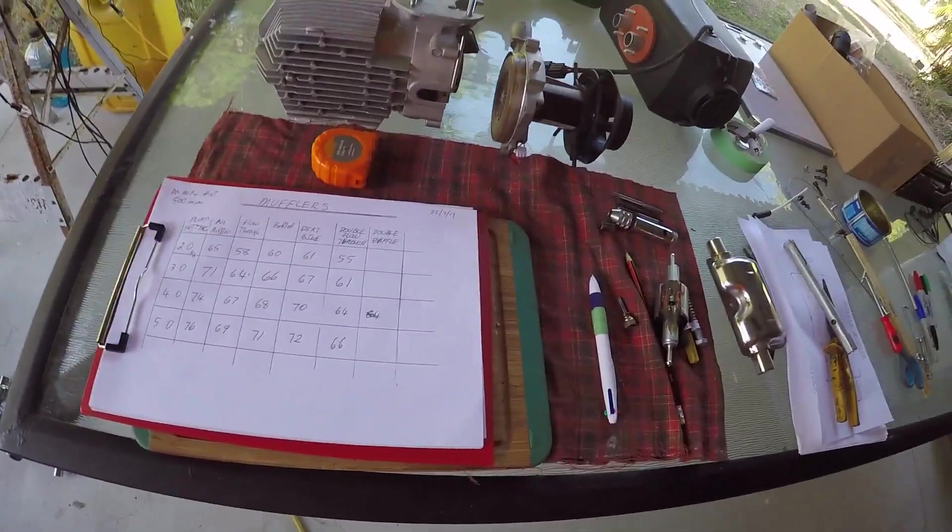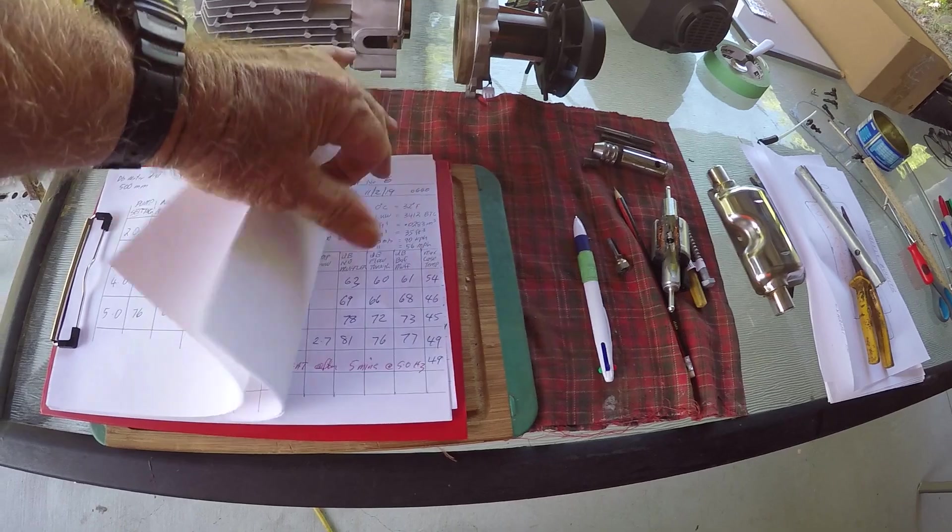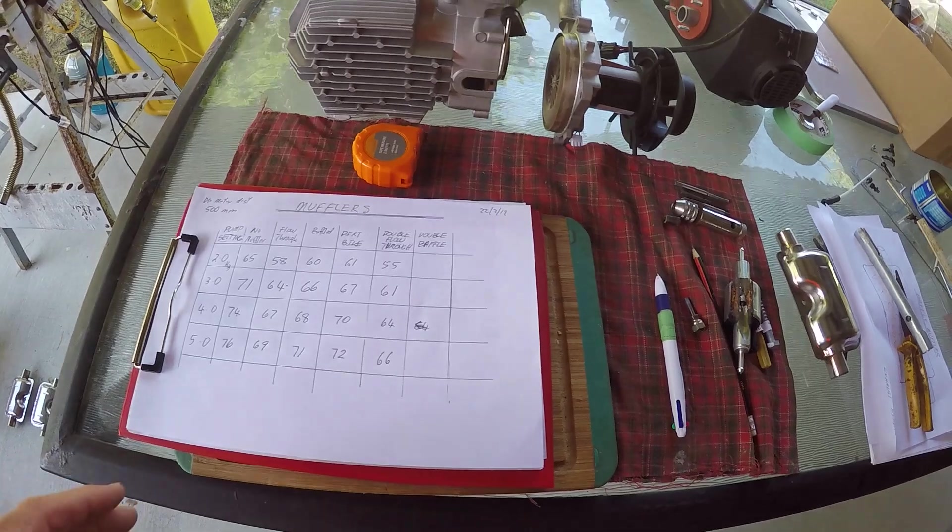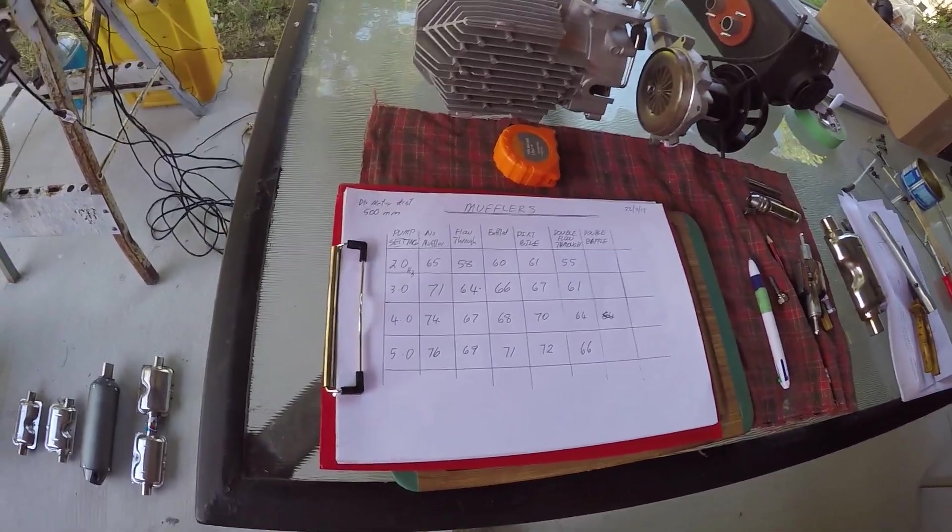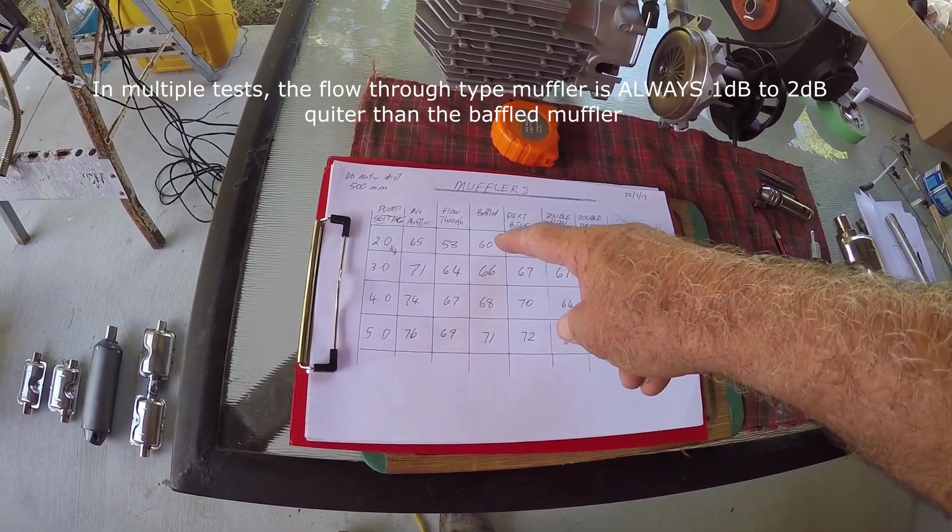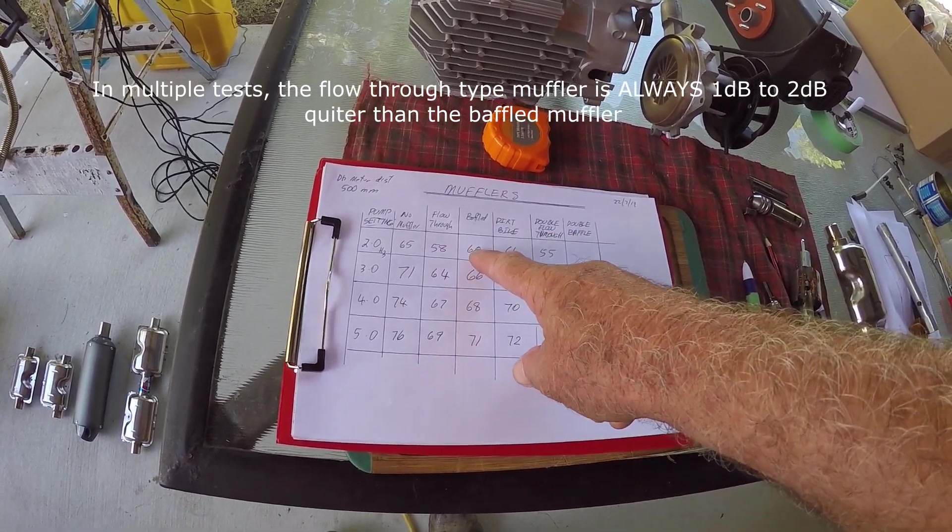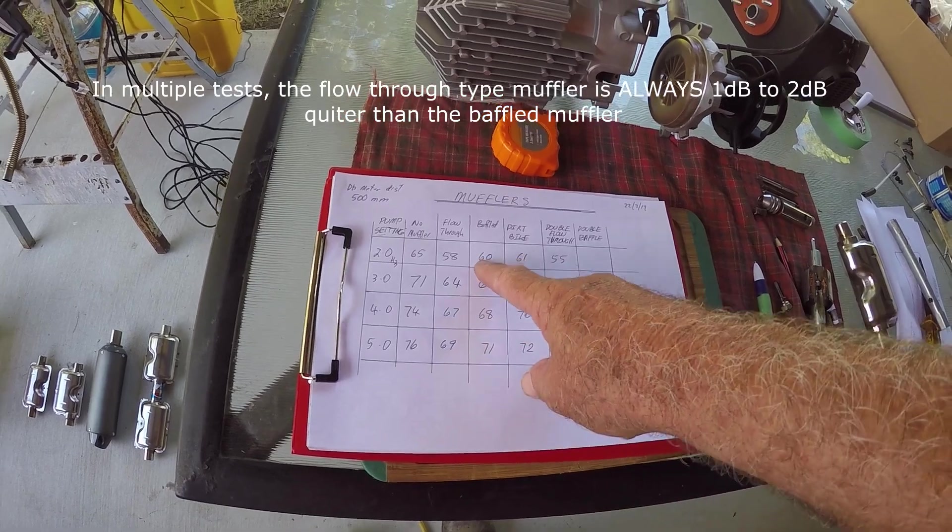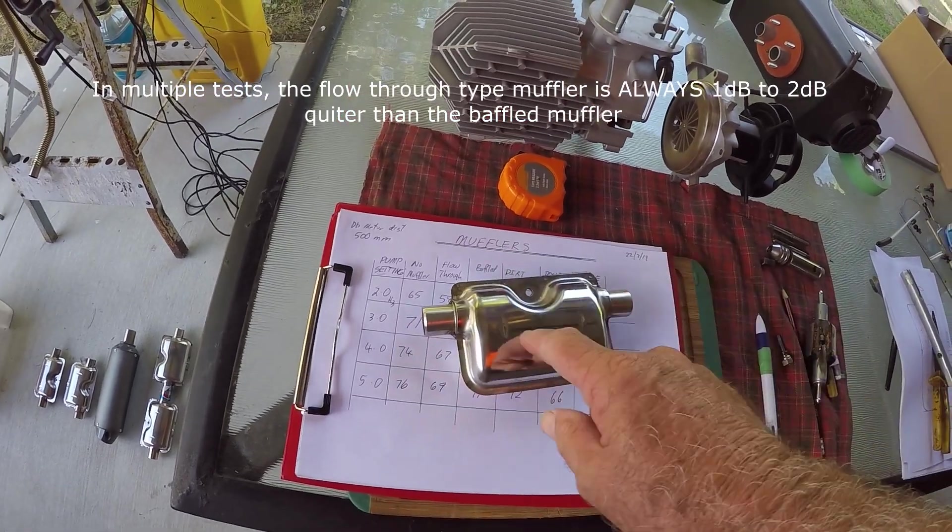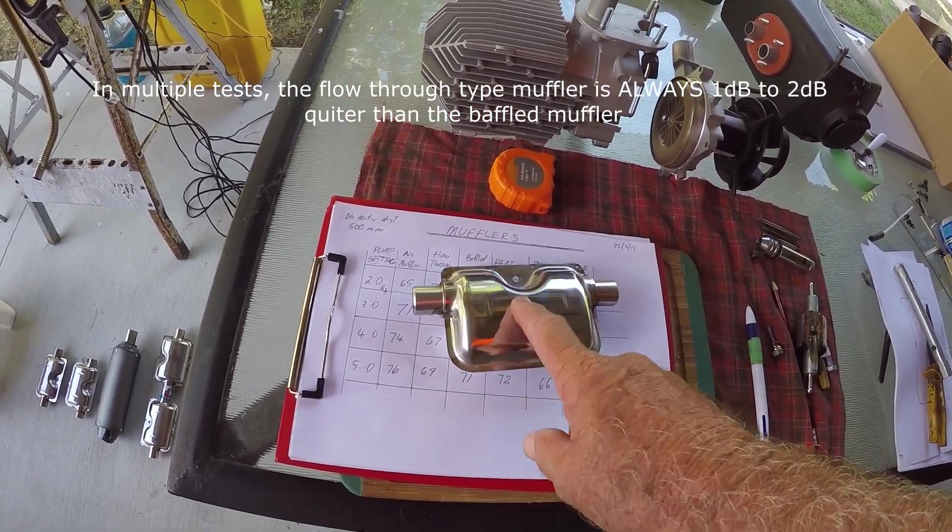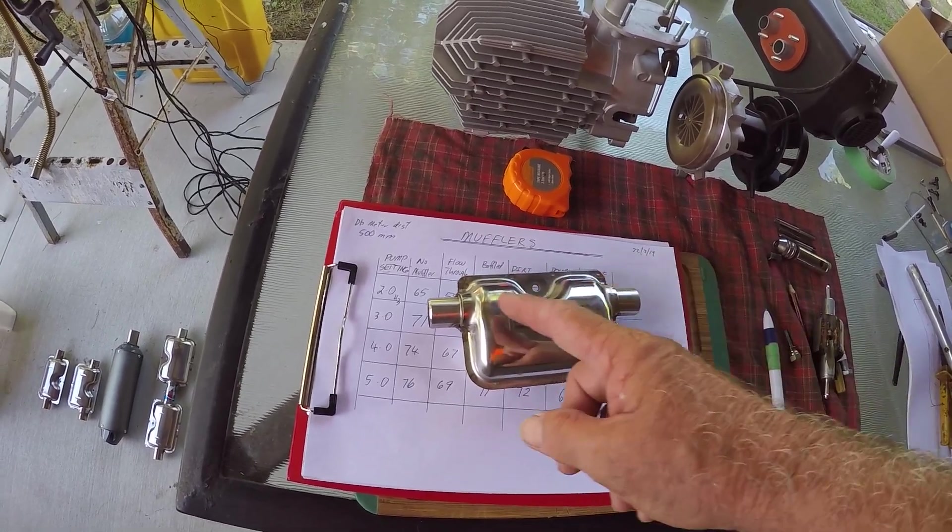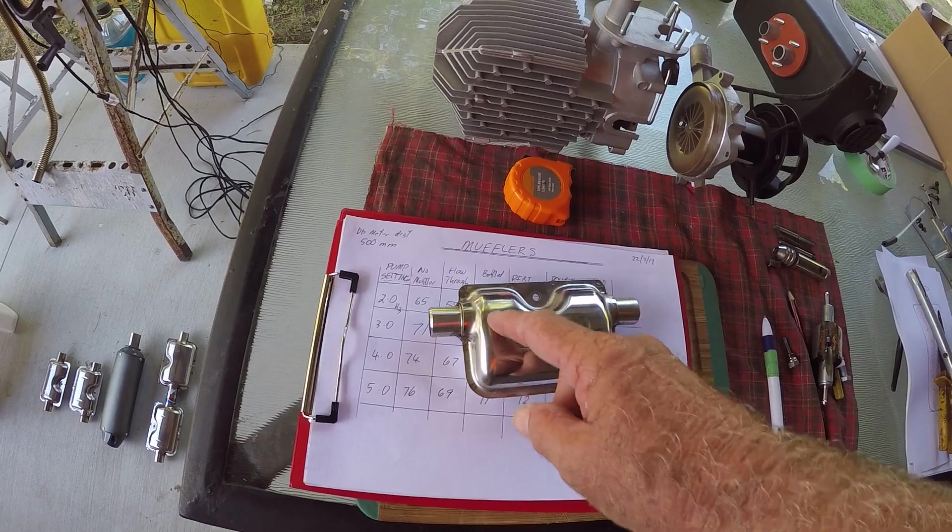Now I've done a lot of these tests on these mufflers and I've got lots and lots of recordings. And as surprising as it may seem, the flow through muffler is always one to two decibels quieter than the baffled muffler. So regardless of what people initially think, this muffler is louder than the flow through. And what I think happens is because you've got all the curves and changes in direction.